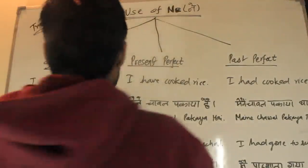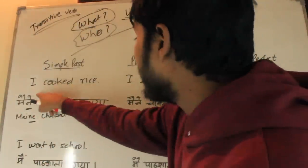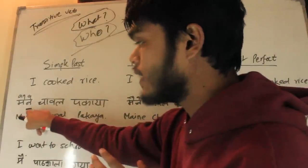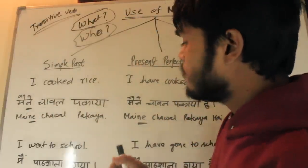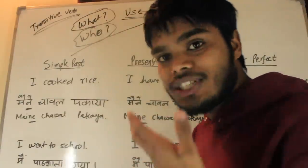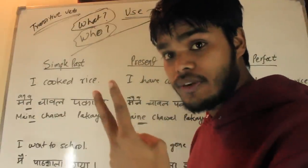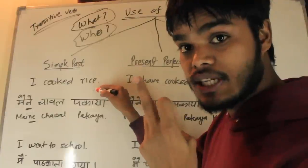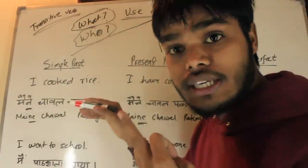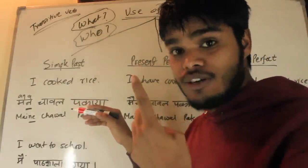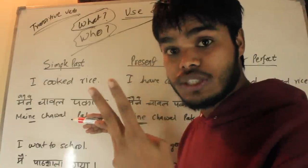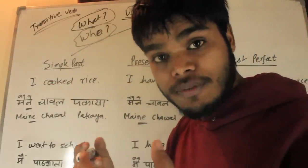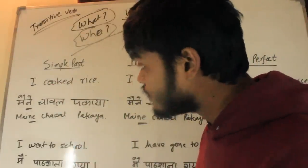For example, in past indefinite tense: 'I cooked rice' — 'maine chawal pakaya.' How do I know that 'cook' is a transitive verb? I ask 'what?' — what did I cook? I cooked rice — I got the answer. Then 'who cooked the rice?' — I cooked the rice. So I've answered both 'what I cooked' and 'who cooked.' Since I have both answers, 'to cook' is a transitive verb.